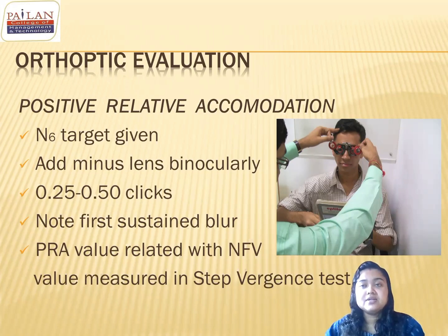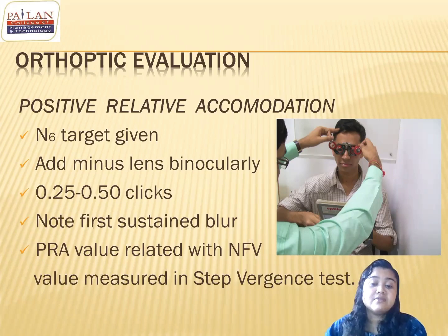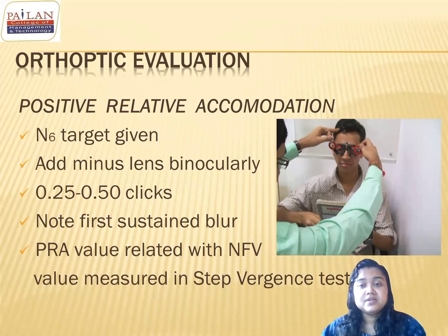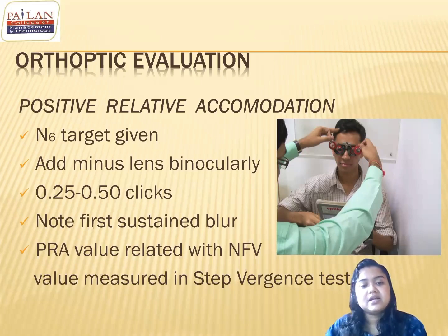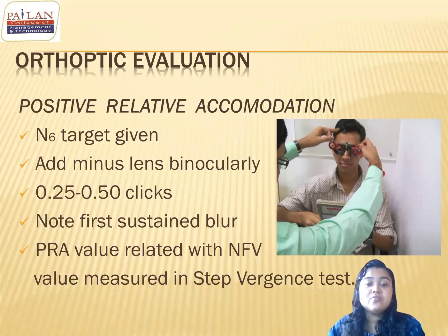We will come to that later — how to do the step-vergence test. The negative fusional vergence value and the PRA value are both related. Basically, PRA value and NFP value should be correlated with each other. In case of higher PRA, when correlated with the negative fusional vergence value, the NFP value is also higher — that may be the reason the PRA value is higher. But if PRA is less, that means the patient might have accommodative insufficiency and cannot stimulate the accommodation to the normal extent.